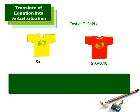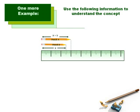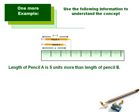Let's use our knowledge of verbal expressions to translate the data given about the cost of t-shirts. The cost of a yellow t-shirt is x dollars and the cost of a red t-shirt is x plus 0.10 dollars. This means the cost of the red t-shirt is 0.10 dollars more than the yellow t-shirt. Similarly, consider the two pencils shown: the length of pencil B is x, whereas the length of pencil A is x plus 5. So we can say that pencil A is 5 units more in length compared to pencil B.